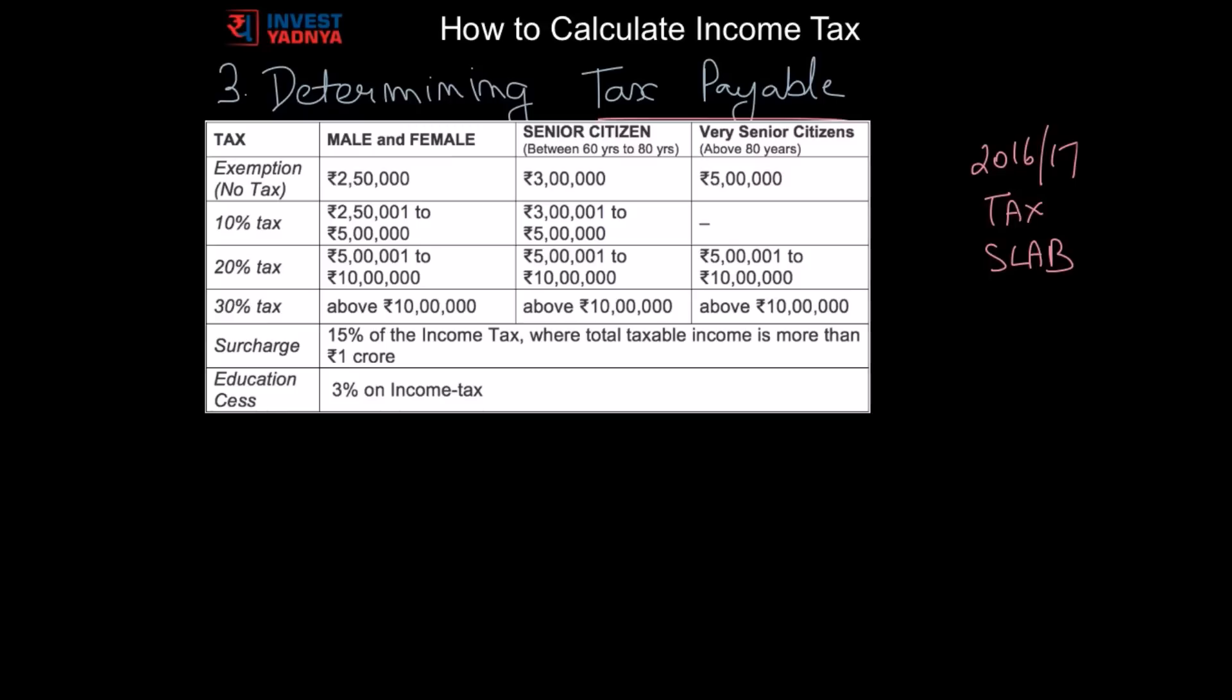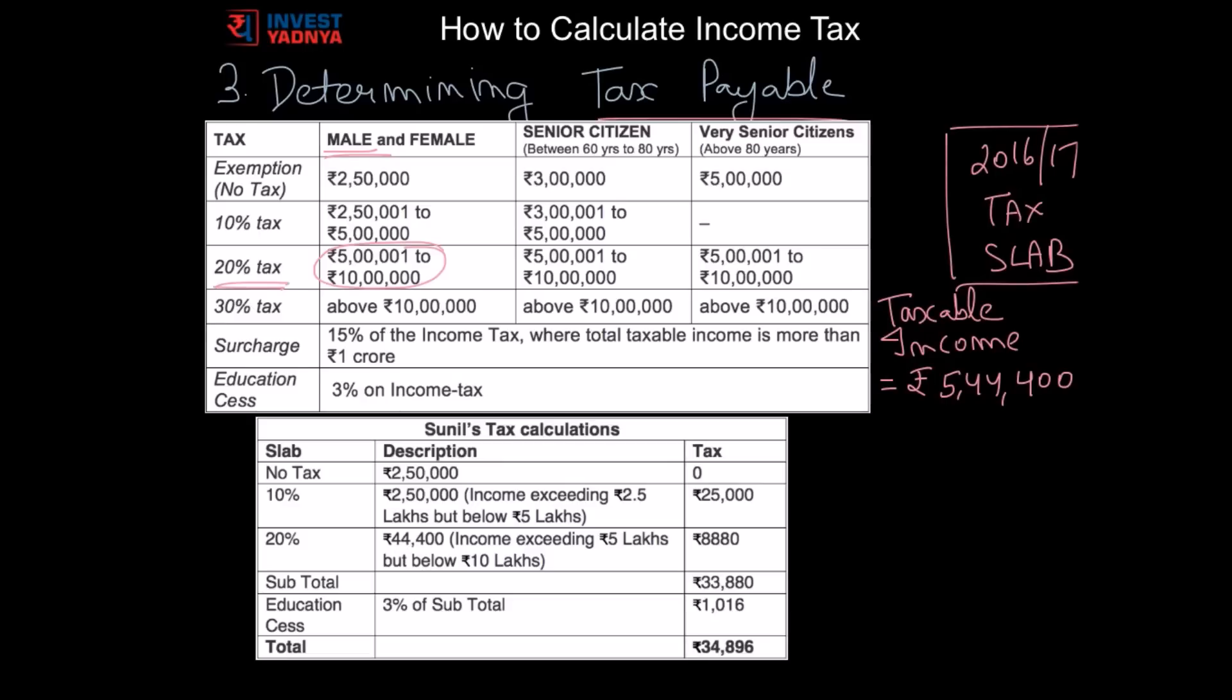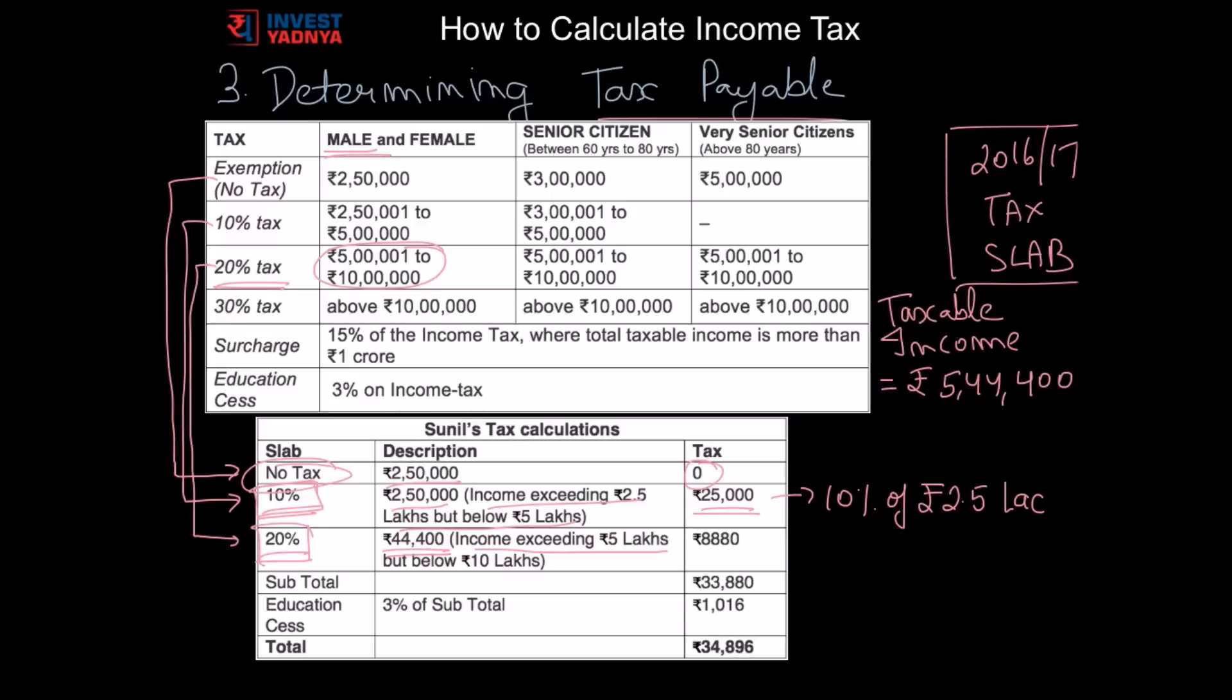Now assuming Sunil to be a male below 60 years and taxable income is Rs 5,44,400, so he falls under 20% tax bracket and this is how his income tax will be calculated. He will not pay any tax on his first Rs 2.5 lakhs of taxable income. For next Rs 2.5 lakhs he will pay 10% of tax, and for the amount above Rs 5 lakhs which is Rs 44,400, he will pay 20% of tax. So after adding education cess, the total income tax will be this much.